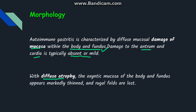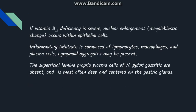There is diffuse atrophy due to the mucosal damage — the mucosa of the body and fundus appears markedly thinned, and the rugal folds are lost. If vitamin B12 deficiency is severe, which occurs late in the disease course, nuclear enlargement known as megaloblastic change can be seen within the epithelial cells of the stomach, in addition to red blood cells.